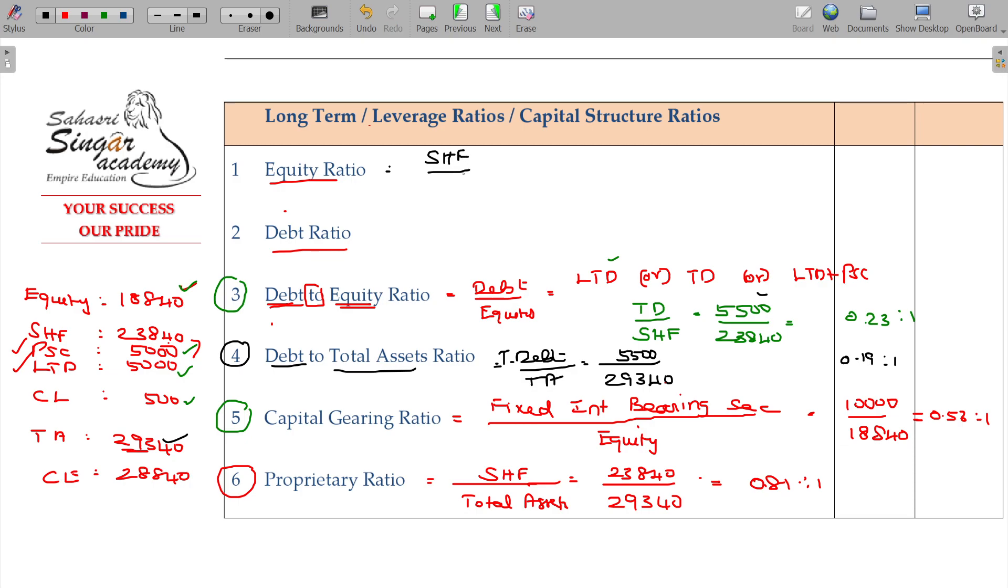Shareholders' funds divided by capital employed. Debt ratio - debt divided by capital employed. Shareholders' funds is 23,840, capital employed is 28,840. This value being 0.83 is to 1. Debt is 5,000 - total debt. 5,500 divided by capital employed being 28,840. Then the ultimate value being 0.19 is to 1.